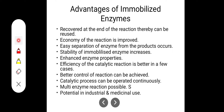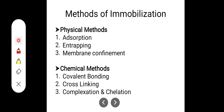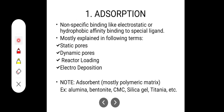There are certain techniques and methods of enzyme immobilization — basically two: physical methods and chemical methods. Under physical methods there are three: adsorption, entrapment, and membrane confinement. Under chemical methods there are also three: covalent bonding, cross-linking, and complexation and chelation.